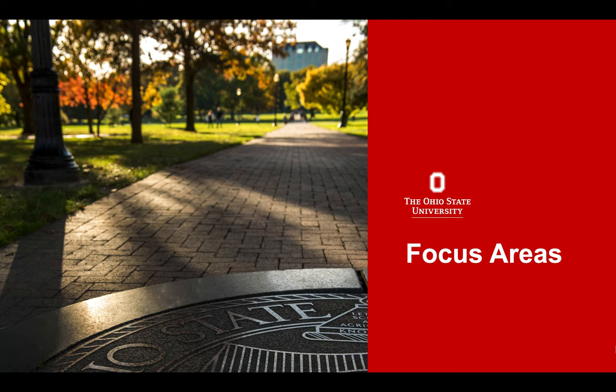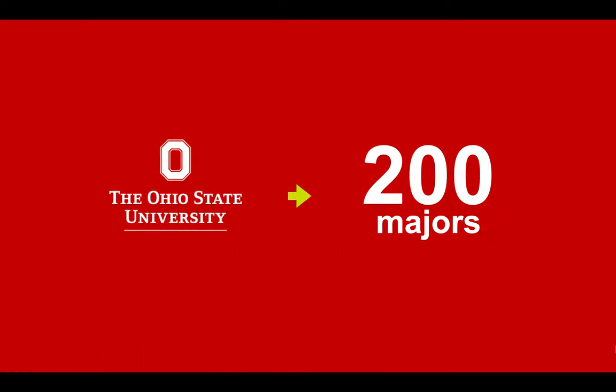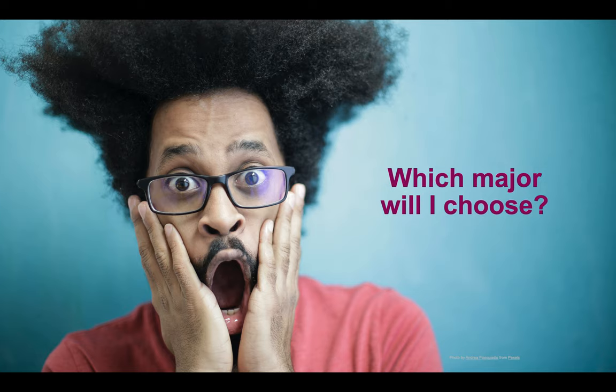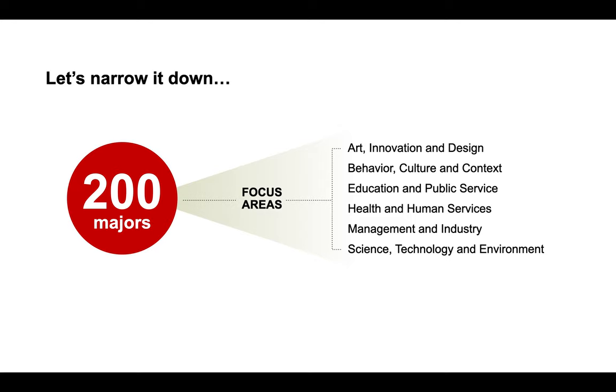In this video, we will introduce you to focus areas and how considering these categories will help us plan your first semester schedule. Ohio State offers more than 200 majors, and for many students, the idea of exploring this many options can feel overwhelming. We categorize all those options into six broad categories called focus areas.